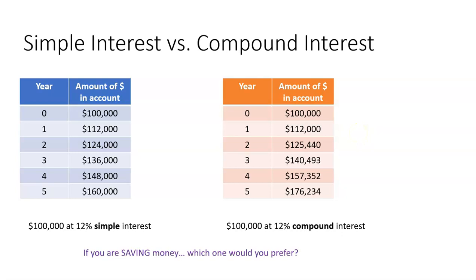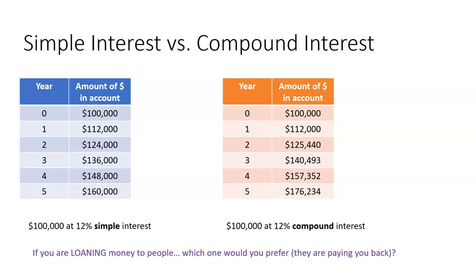So, if you're saving money, which one would you prefer? I'm going to guess the compound interest. In this example, you end up with over $16,000 more. And if you're loaning money to people — imagine that you're a bank — which one would you prefer? Probably also the compound interest, because they're going to pay you back more. If you loan out $100,000, you can get paid back $176,234 with compound interest in this scenario.